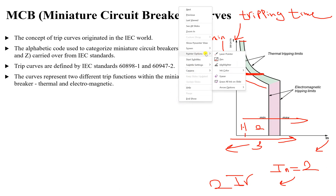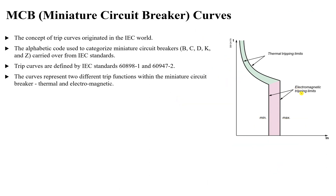There is also the electromagnetic part of the curve, where the tripping time is very, very small — almost instantaneous. This occurs between 3 to 5 times the rated current. For example, if the circuit current reaches 3, 4, or 5 times the rated current, the miniature circuit breaker will instantaneously trip the circuit.